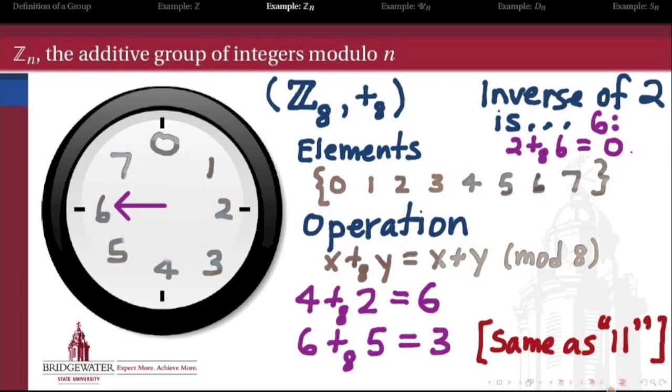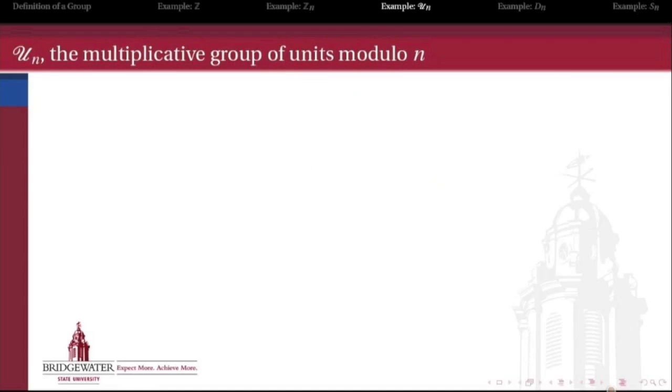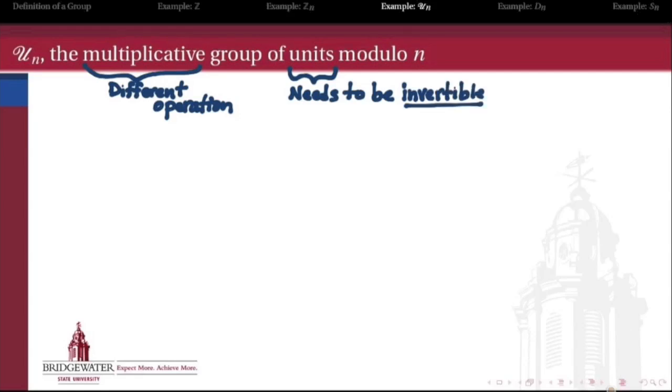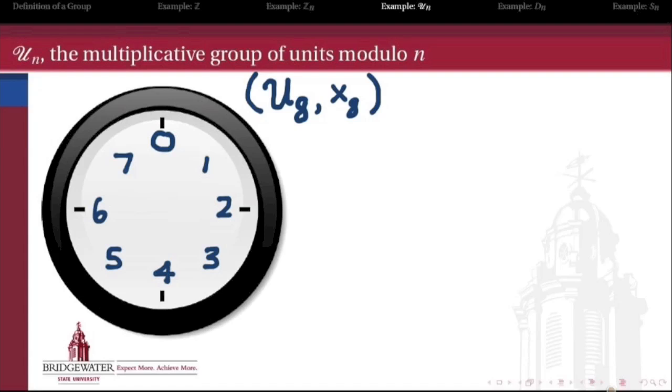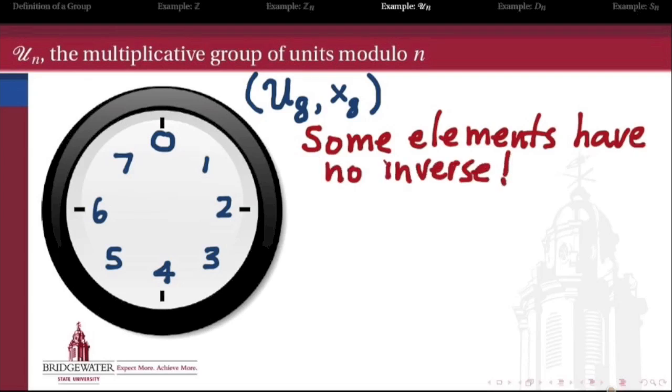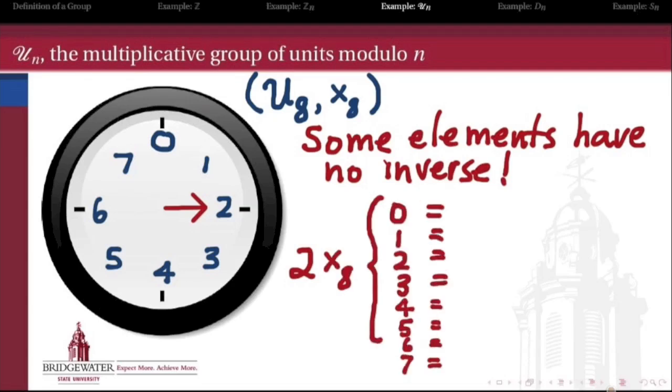We chose addition in this example, but we didn't have to. What if we decided to use multiplication instead? Let's do clock face arithmetic again, except using multiplying. We're going to have to work harder to make sure the elements in our group are invertible—invertible in the multiplication sense now, not addition. Let's have 8 points on our clock face again. The problem is that some elements won't have inverses under multiplication.